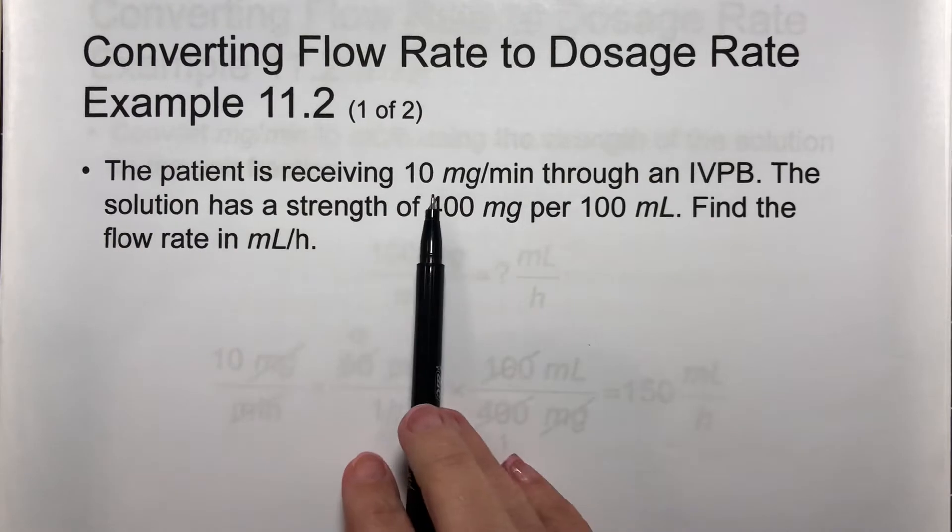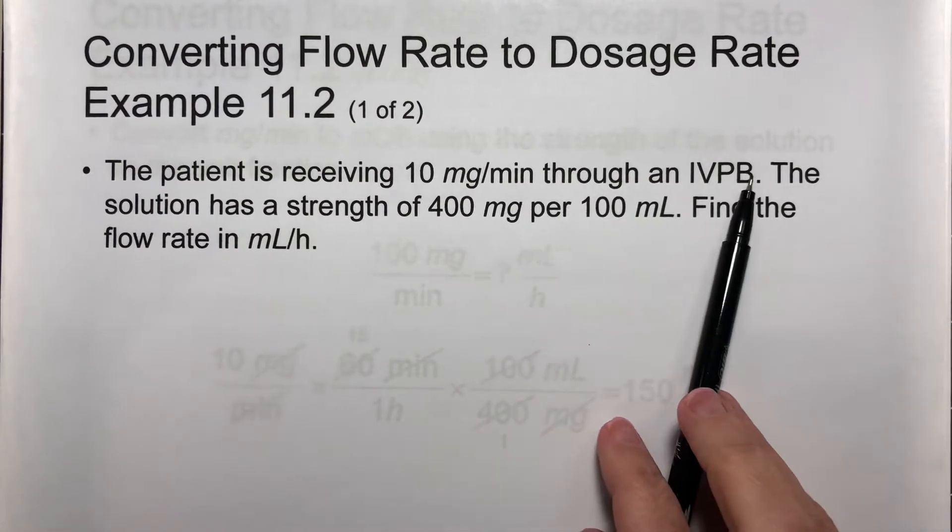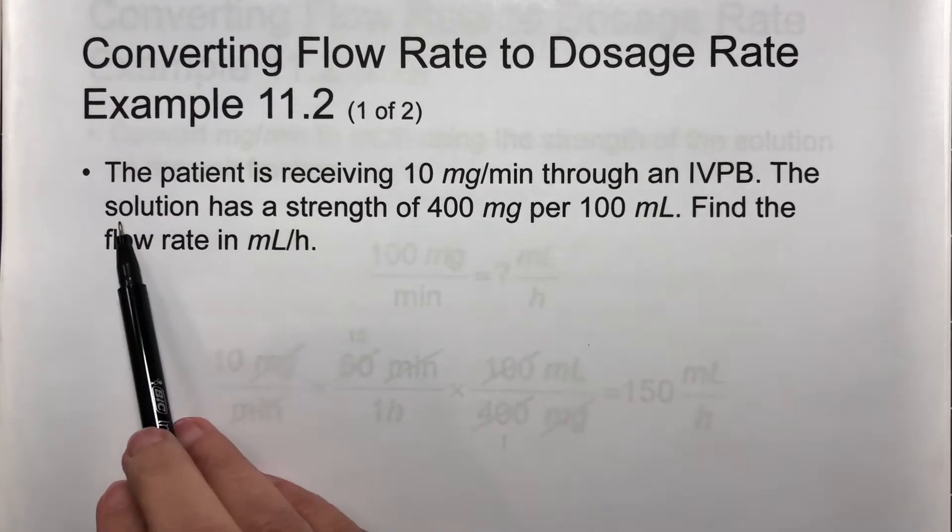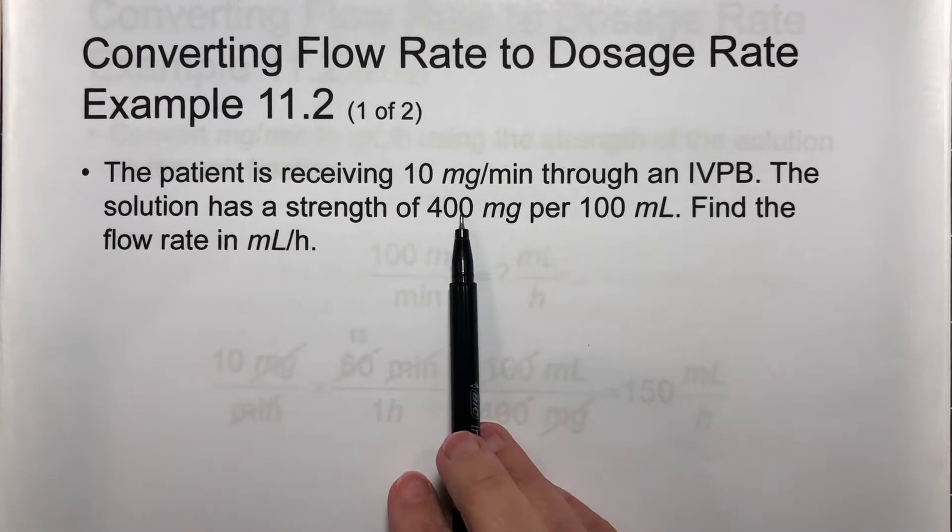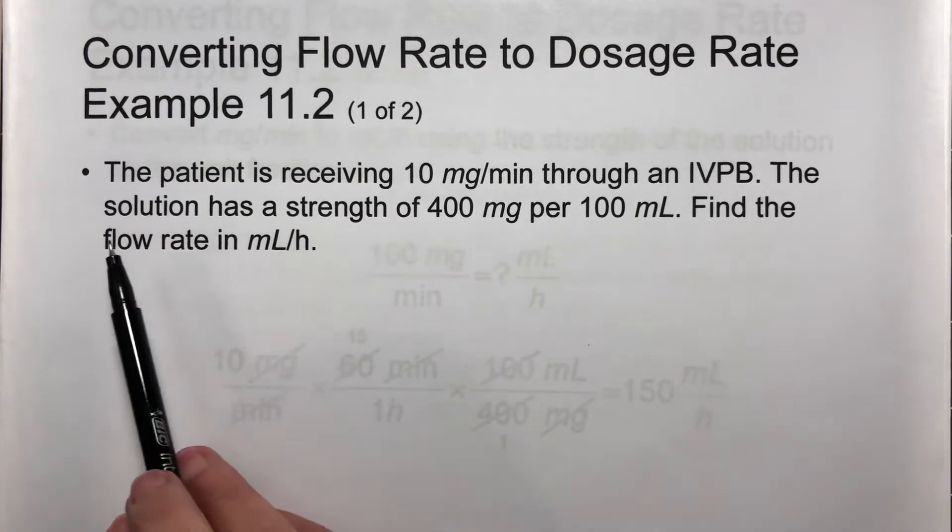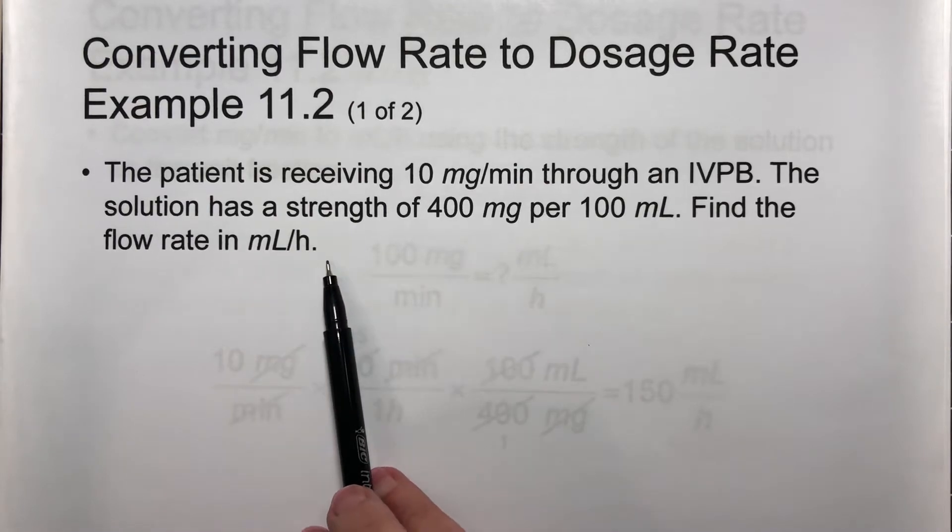The patient is receiving 10 milligrams per minute through an IV piggyback. The solution has a strength of 400 milligrams per 100 milliliters. Find the flow rate in milliliters per hour.